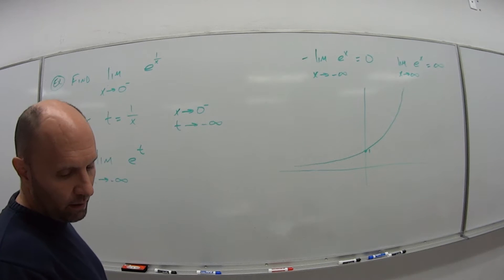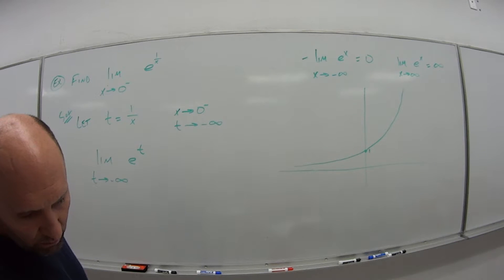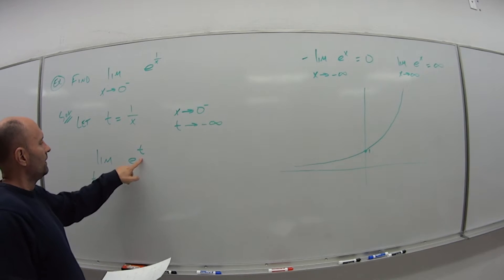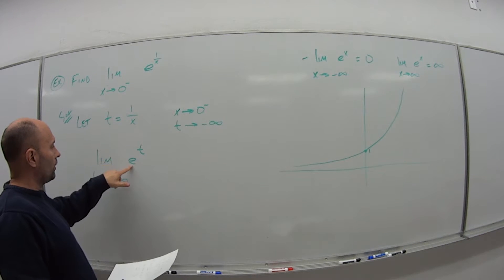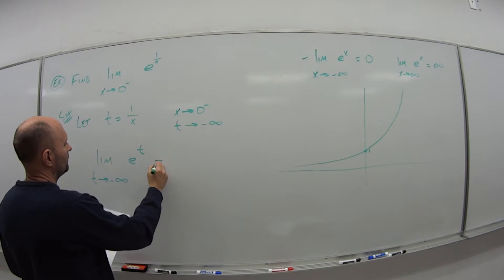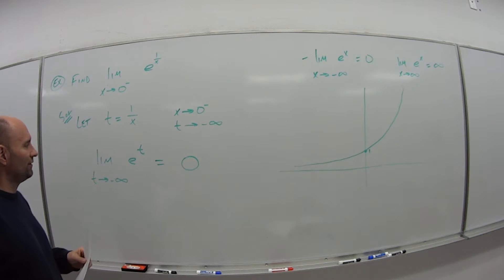Similar idea to video 1. As a number bigger than 1 is going to a negative infinity, the negative exponent, this thing goes to 0.